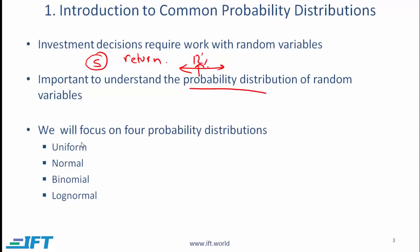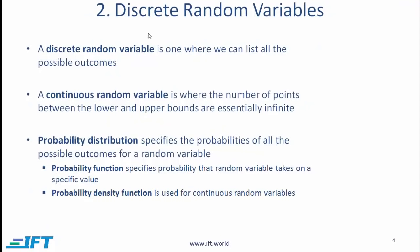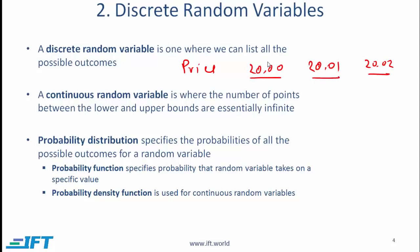We will focus on four major probability distributions. Perhaps the most important is the normal distribution. A discrete random variable is one where we can list all possible outcomes. Stock price is a discrete random variable because it takes on specific values — the price at end of day might be $20.00, $20.01, $20.02, and so on. These are discrete values, and stock price is a classic example of a discrete random variable.